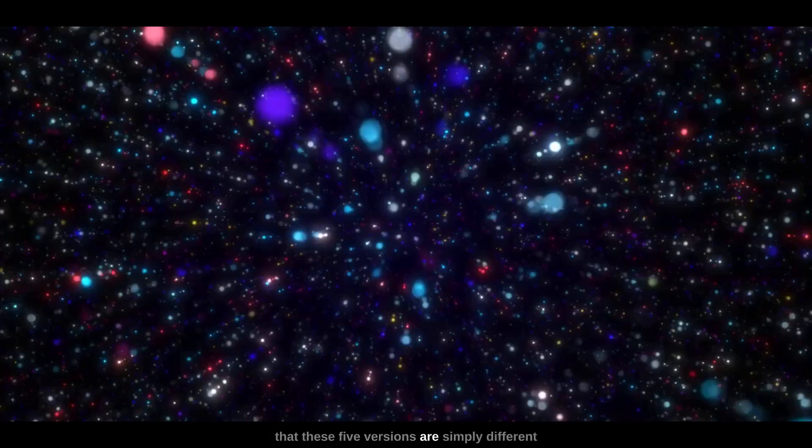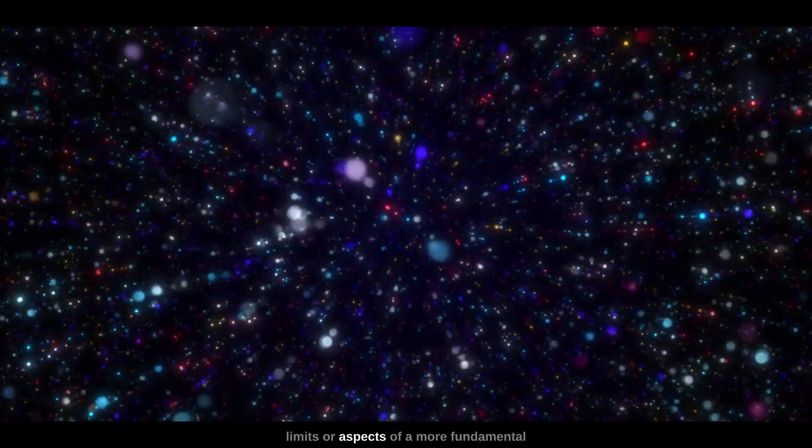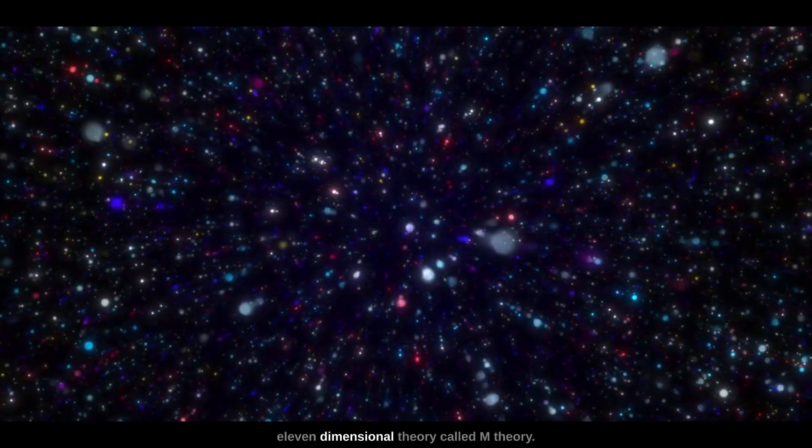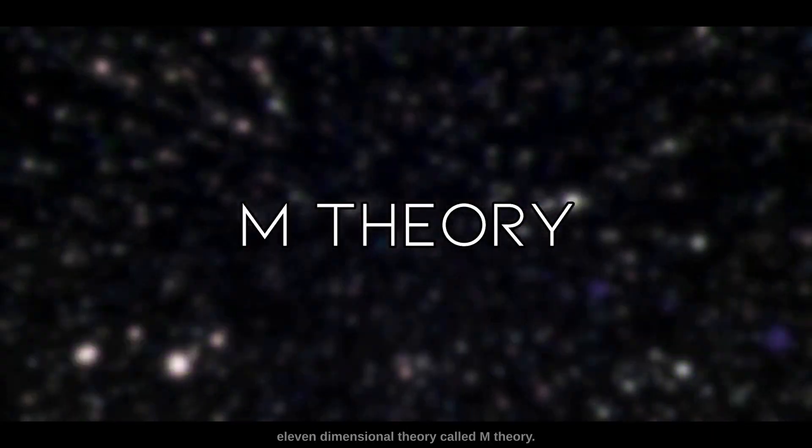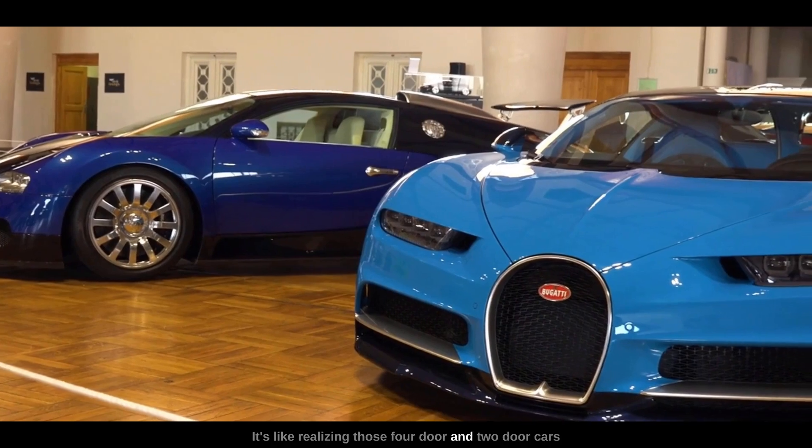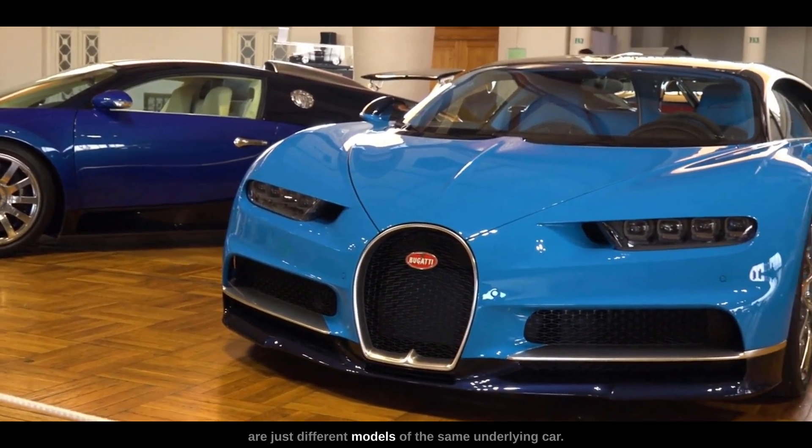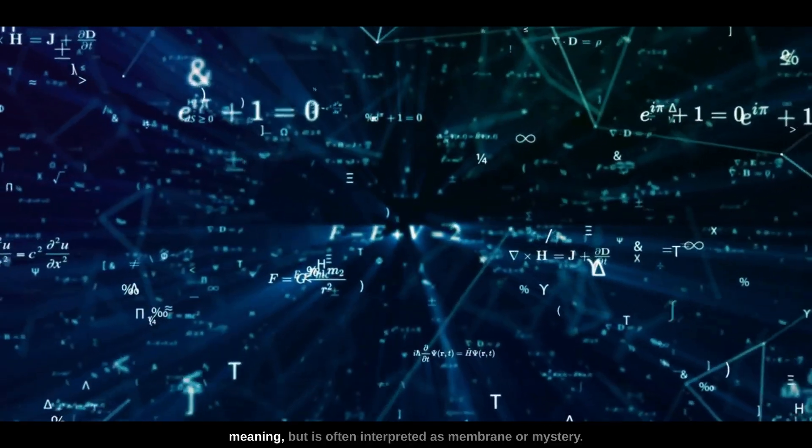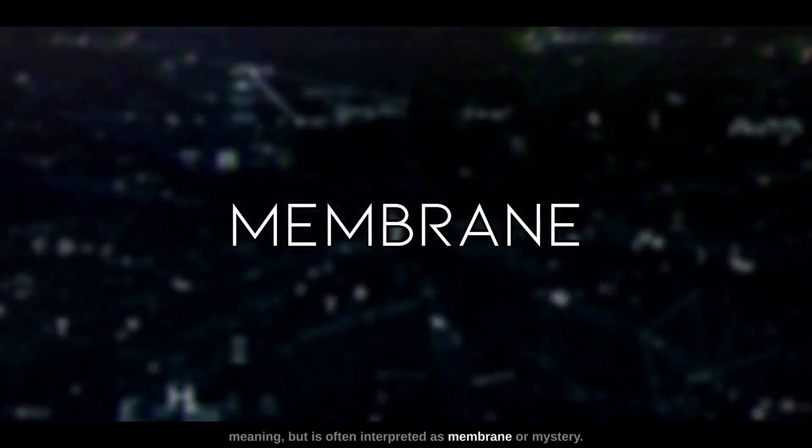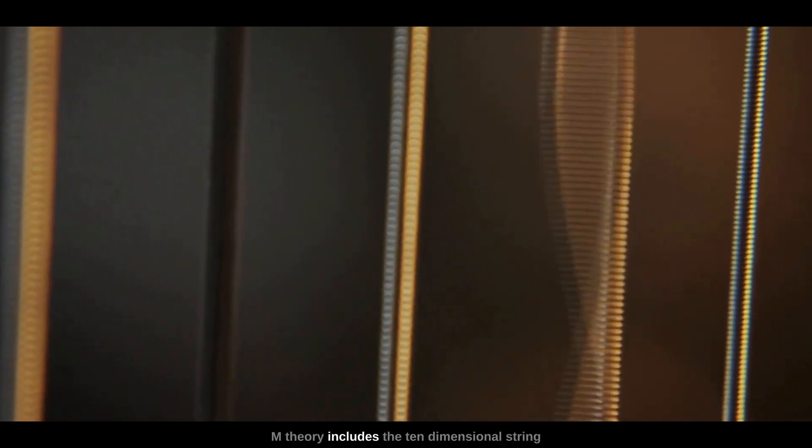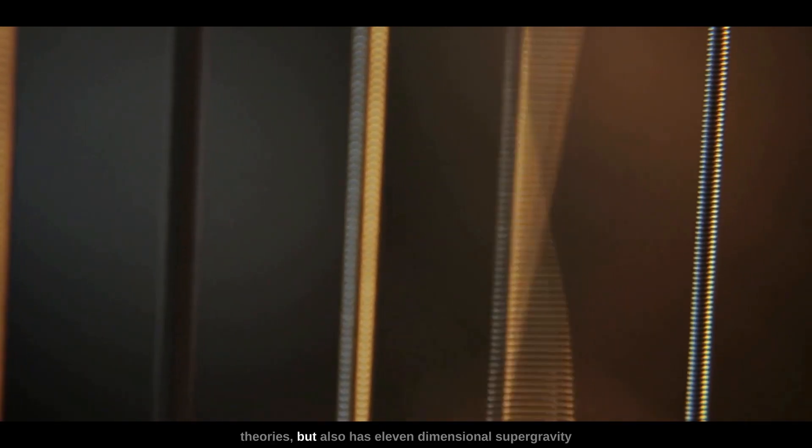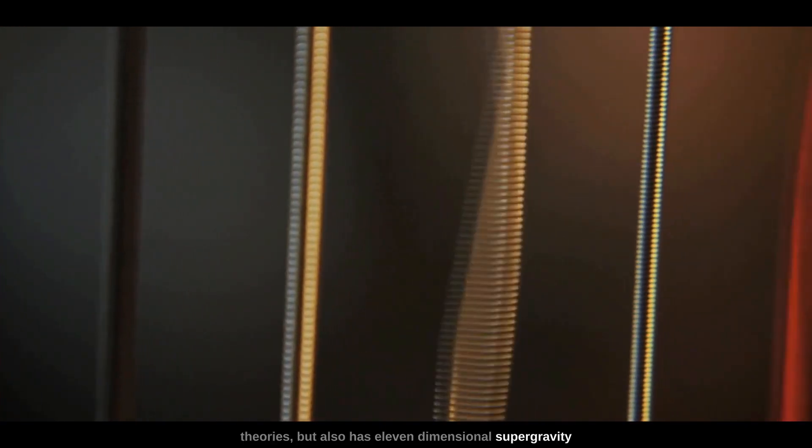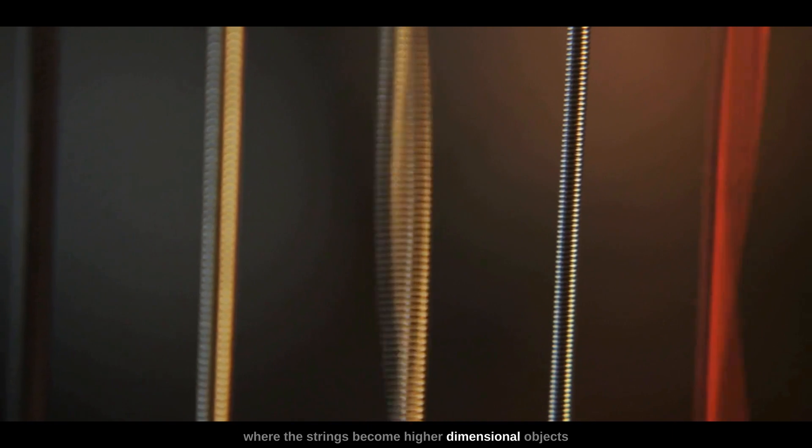In the 1990s, physicist Edward Witten proposed that these five versions are simply different limits or aspects of a more fundamental 11-dimensional theory called M-theory. It's like realizing those four-door and two-door cars are just different models of the same underlying car. The M in M-theory doesn't have an official meaning, but is often interpreted as membrane or mystery. M-theory includes the 10-dimensional string theories but also has 11-dimensional supergravity, where the strings become higher-dimensional objects known as membranes, or branes.